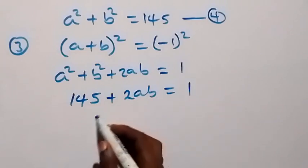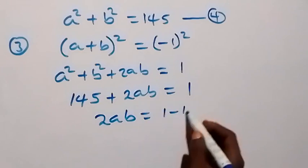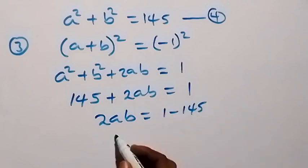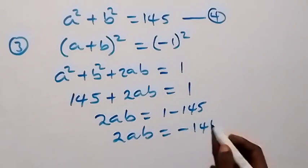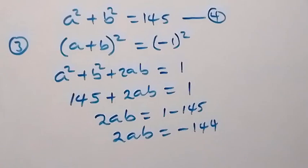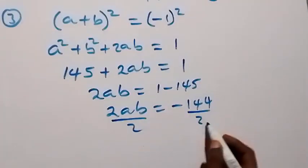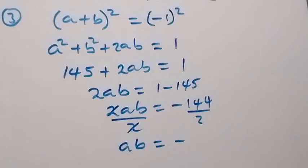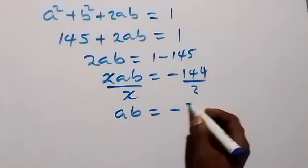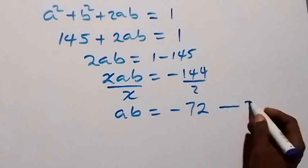Then we have 2ab equals 1 minus 145, which is minus 144. We can divide both sides by 2, and 2 will cancel, so that we have ab equals minus 72. Let's label this as equation 5.